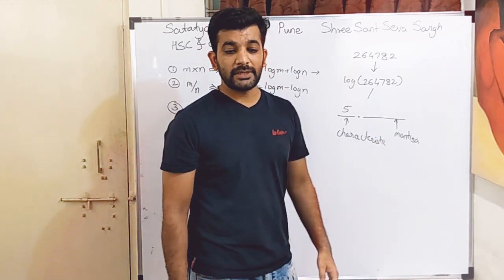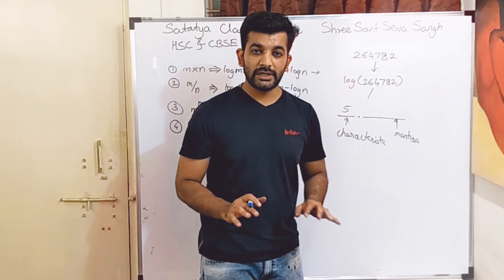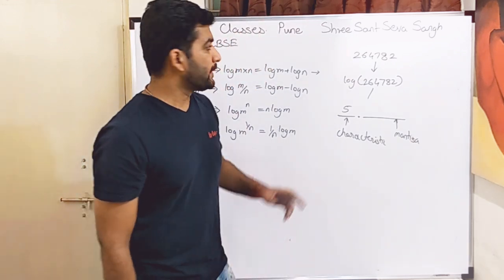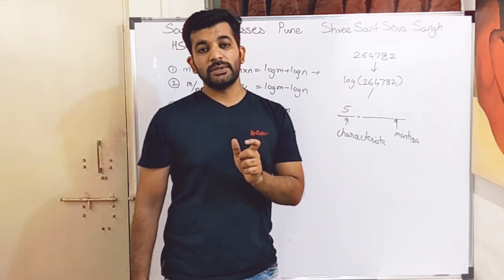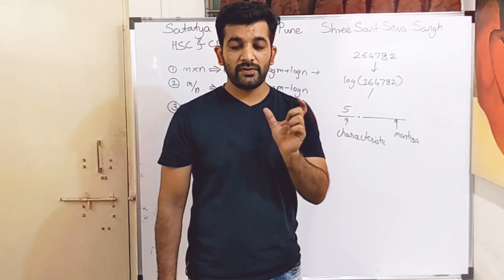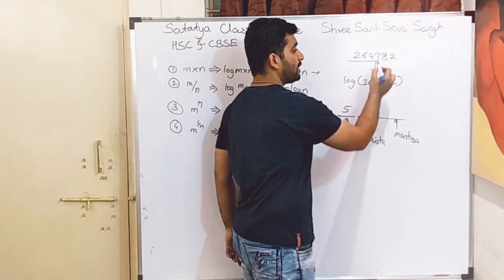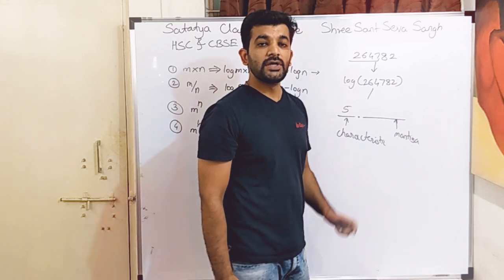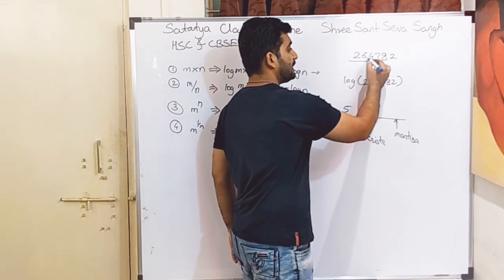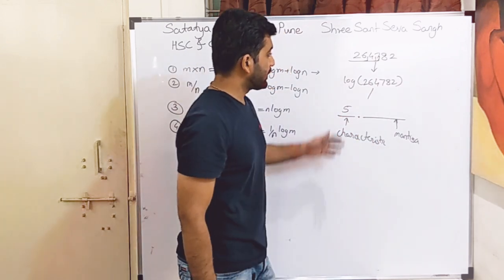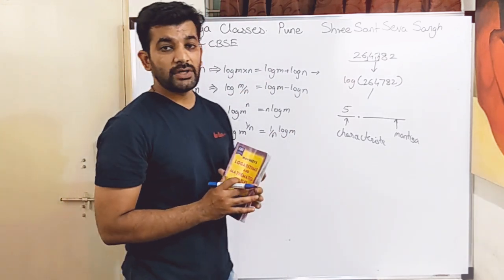Next we have to find the mantissa part. To decide the mantissa part, we select the first four significant figures — whichever number it might be. The remaining figures go for rounding up. The limitation of log calculation is we can accurately use only the first four numbers. So we select the first four significant figures and divide these four numbers into three parts: 26, 4, and 7.